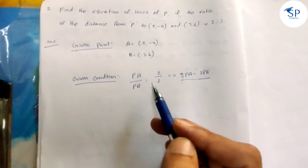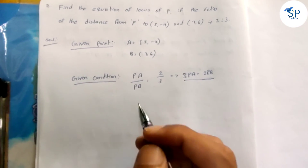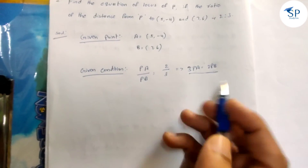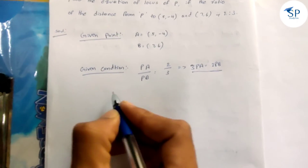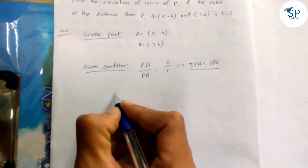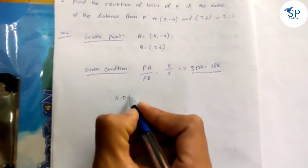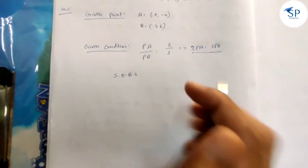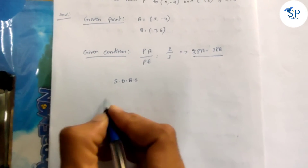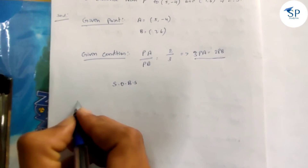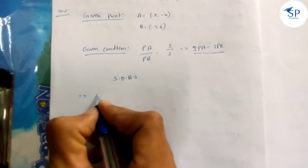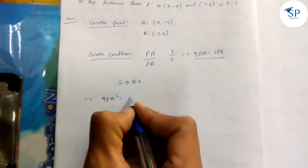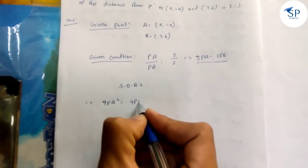Squaring on both sides, we get 9PA² is equal to 4PB².